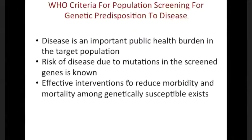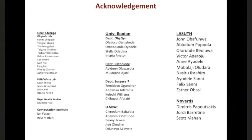This has been a very interesting journey for us. Our thought now is that we should actually be figuring out a way to do population screening for genetic predisposition to cancer, and we'll get there. Cancer is a disease that has an important public health burden in all populations. We know the risks to mutations now when we screen for them, and effective interventions to reduce morbidity and mortality among genetically susceptible people exist. Part of what we need to do with the resources we have is to build the interdisciplinary team that would actually be able to get the science out there. Lots of people are working with us in Nigeria and of course here at the University of Chicago to help us. Thank you.